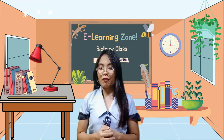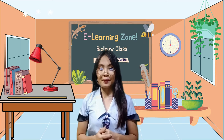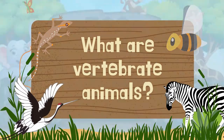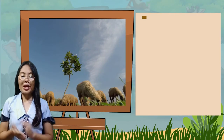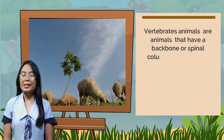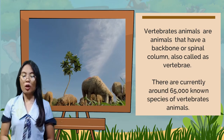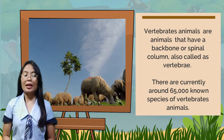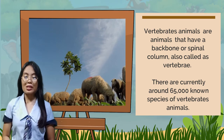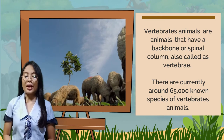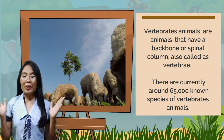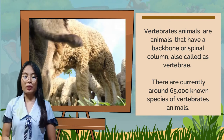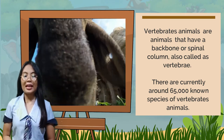Let us know the definition of vertebrate animals. Vertebrate animals by definition are animals that have a backbone or spinal column, also called a vertebral column. There are currently around 65,000 known species of vertebrate animals. This sounds a lot, but they are only around 4% of all the animals on Earth.